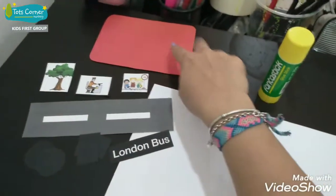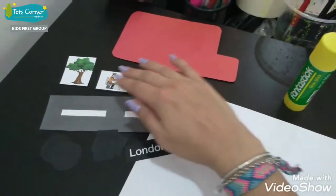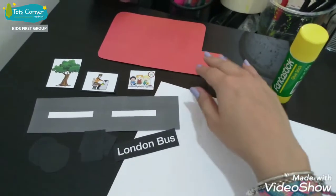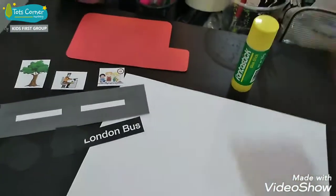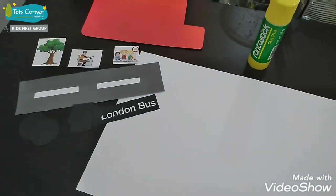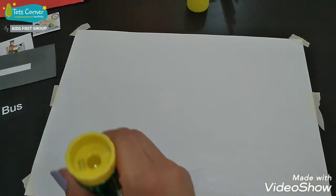So today let's make the London bus. I've sent you a sheet that has all these pictures in it, so you need to cut them out. Then you need a paper and glue. Let's start.